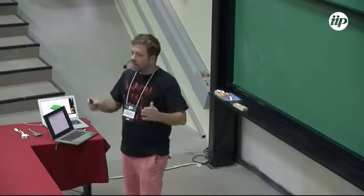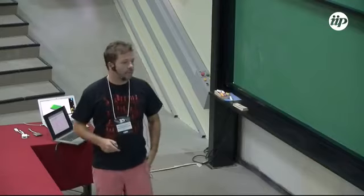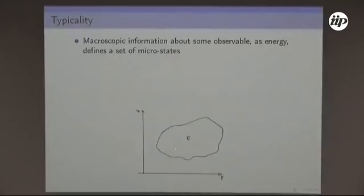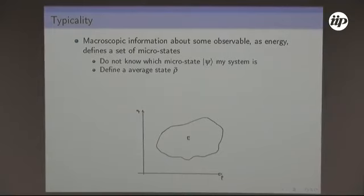The idea is: I have a very complex system. I can illustrate with a classical phase space — I can't really monitor all degrees of freedom, but I have some macroscopic information, like the energy. So I know the set of possible microstates. In the quantum case these would be pure states, but I'm not sure which one, so I define an average state, an ensemble.